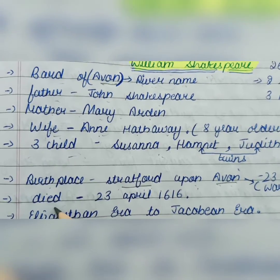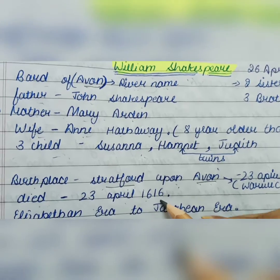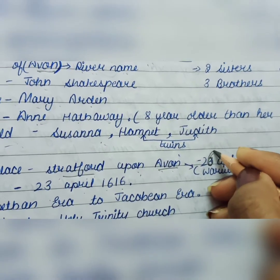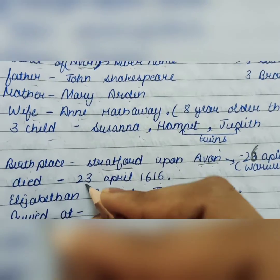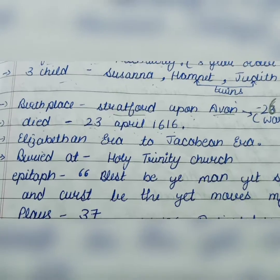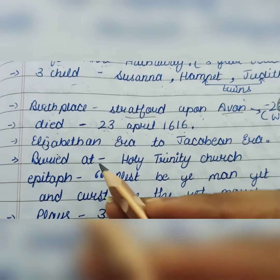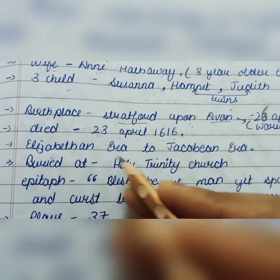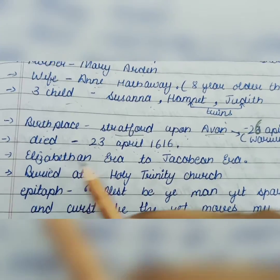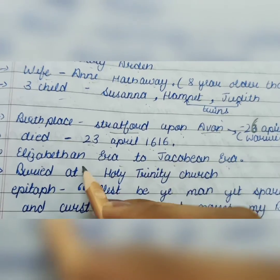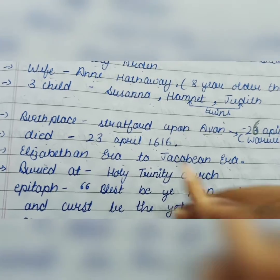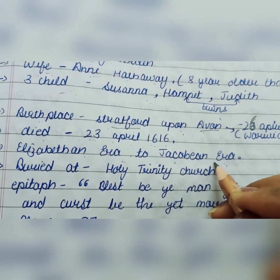Correction: William Shakespeare was born on 26 April — not 23 April. He was born on 26 April and died on 23 April 1616. Shakespeare had a long literary journey spanning from the Elizabethan era to the Jacobean era, and both these eras were part of the Renaissance period.